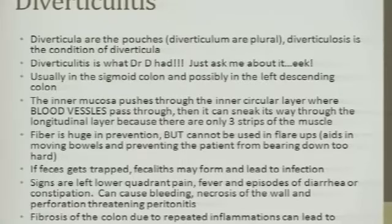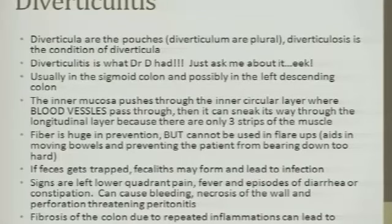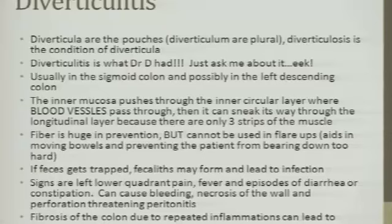Usually it's the sigmoid colon, though it can also be the left descending — although it can rarely be right-sided too. The intermucosal layer tends to push up where blood vessels pass through, which is a weaker area. In the colon, which has three strips of muscle, the walls between those strips are weaker. Where a blood vessel passes through between those strips, with insufficient fiber and straining at stool, pressure can build up on the wall and cause an outpocketing.